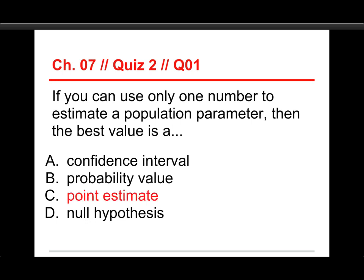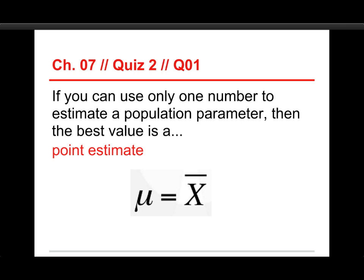The answer is a point estimate, that's if you can give only a single number, because a confidence interval has two numbers. A probability value doesn't estimate a population parameter, something from hypothesis testing which we'll talk about in the next chapter, and the same thing is true for the null hypothesis. Again, don't forget, we've got this little formula, it's kind of silly to even call it a formula for the point estimate, but we just have that the population mean is equal to the sample mean. It's not saying that that is what it is, but that is the single best estimate, the single best guess as to what the population mean is.